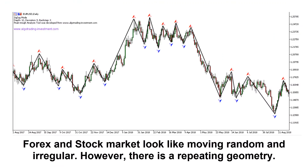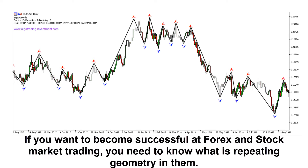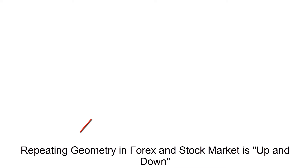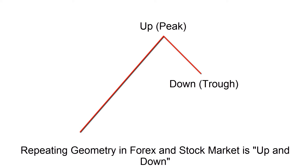Forex and stock market look like they are moving randomly and irregularly. However, there is a repeating geometry. To know this repeating geometry is the key to success in Forex and stock market trading. Forex and stock market endlessly repeat up and down — hence, they are Fractal. This up and down geometry is the building block of the Fractal wave in Forex and stock market, and this simple up and down geometry is repeating forever.